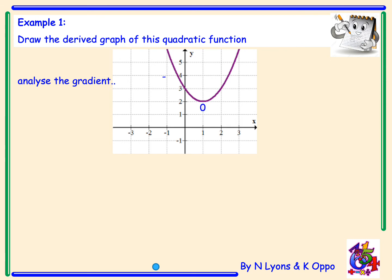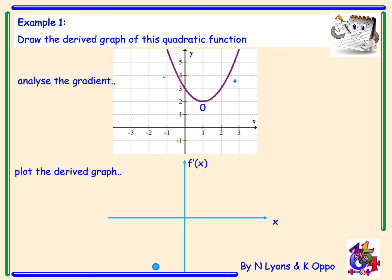I then have a minimum turning point where the gradient equals zero, and then the function starts increasing again — I've got a positive gradient. So I have a negative gradient, a gradient equal to zero, and a positive gradient. Directly underneath the graph, I plot the derived graph on coordinate axes labelled x and f'(x).